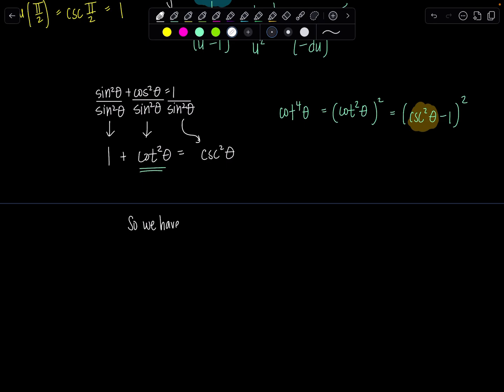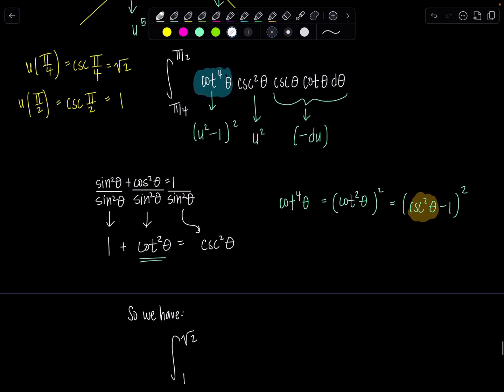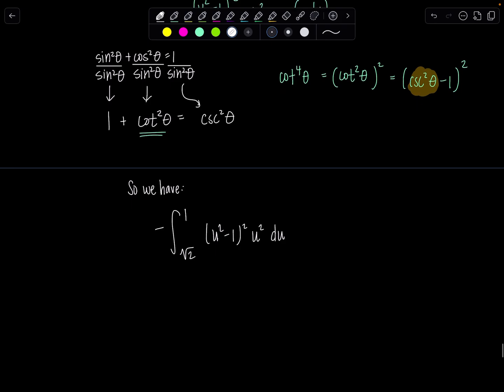Great. So now we're ready. Let's rewrite our whole integral in terms of u. Let the people know we're putting it together. √2 to 1—these are my new limits. We have u squared minus one squared, u squared, and then this negative du. I'm gonna put the negative outside, and then we have du. Now I'm gonna flip my limits of integration, and that adds an extra minus sign to the whole integral, so that'll make this positive now. So we have 1 to √2, u squared minus one squared times u squared du.